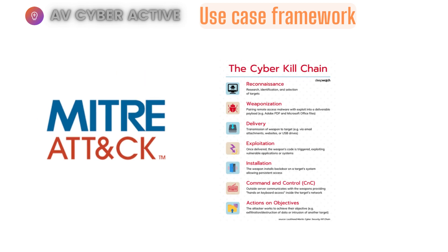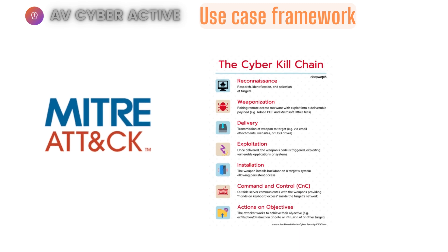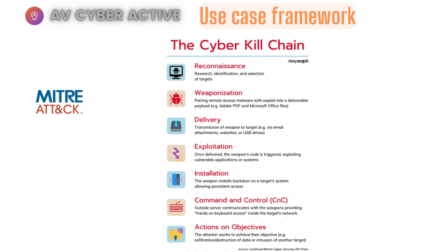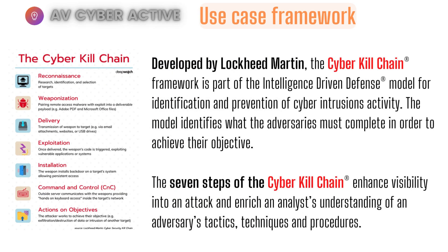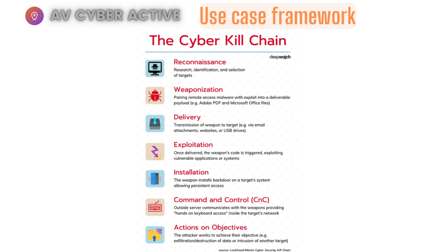The second and most widely heard about is the Lockheed Martin Cyber Kill Chain. Developed by Lockheed Martin, it's a framework and part of the intelligence-driven defense model for identification and prevention of cybersecurity intrusion activity. This model identifies what adversaries must complete to achieve their objective. It has seven steps: reconnaissance, weaponization, delivery, exploitation, installation, C2 command and control, and actions and objectives.